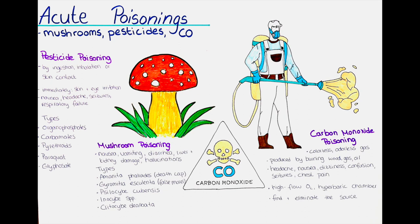Third, pyrethroids. Pyrethroids are synthetic versions of pyrethrins, which are derived from chrysanthemum flowers. They are commonly used in household insecticides and exposure can cause symptoms such as itching, burning and stinging. In severe cases, pyrethroid poisoning can cause seizures, respiratory failure and death. Fourth, paraquat. Paraquat is a highly toxic herbicide commonly used in agriculture to control weeds. It can cause acute poisoning through ingestion or skin absorption, with symptoms including nausea, vomiting, diarrhea, abdominal pain and lung damage.